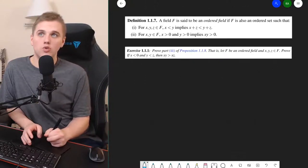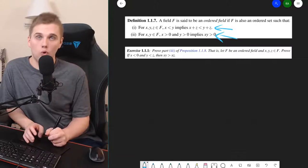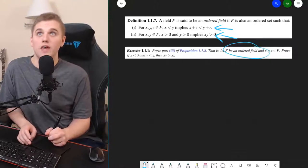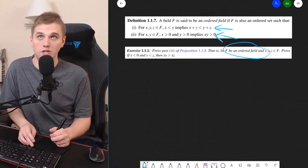Now, to prove this, the only tools that we get come from the definition of an ordered field. We know that f is an ordered field, and so we need to somehow use these tools to arrive at our conclusion, which is what we're going to be doing.